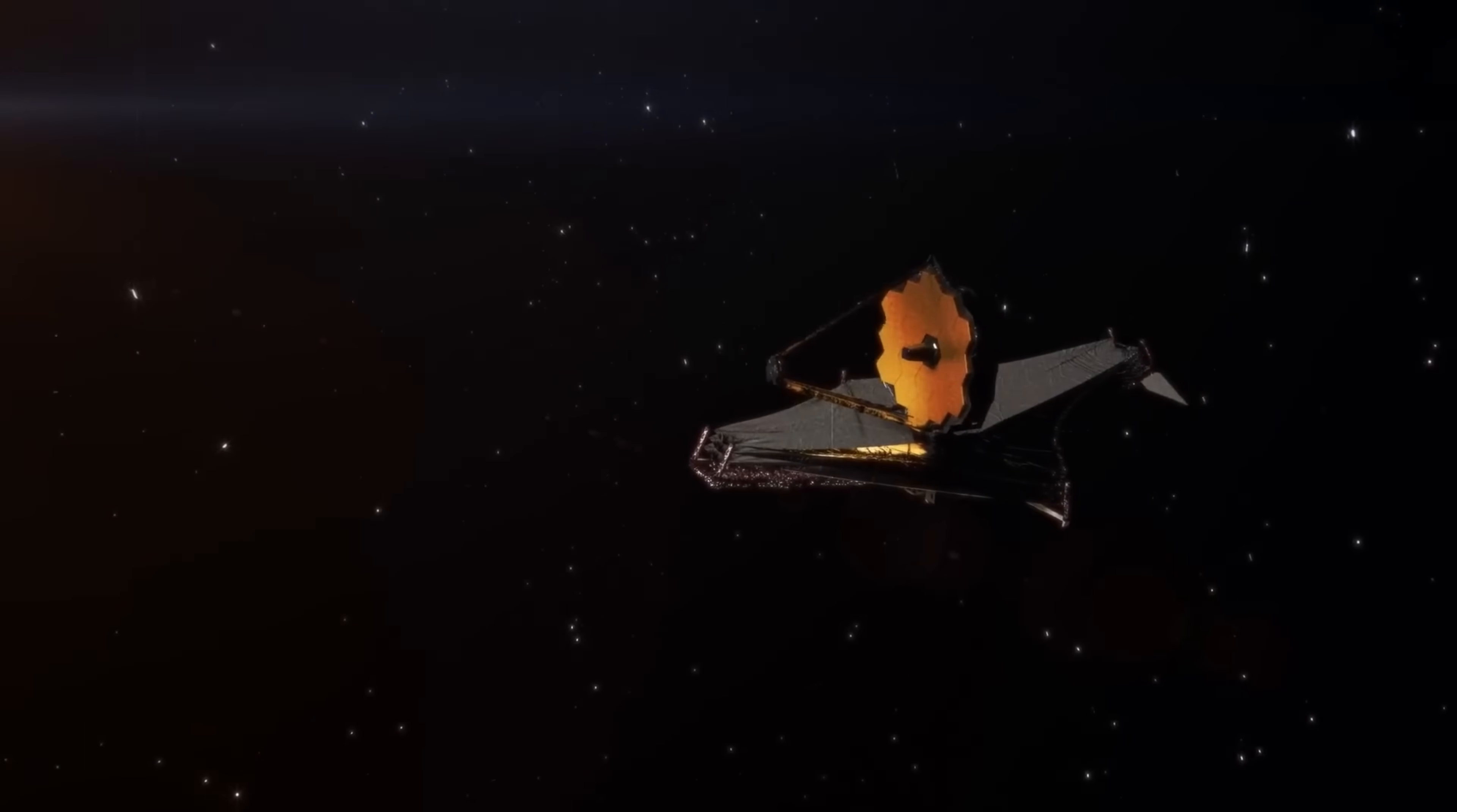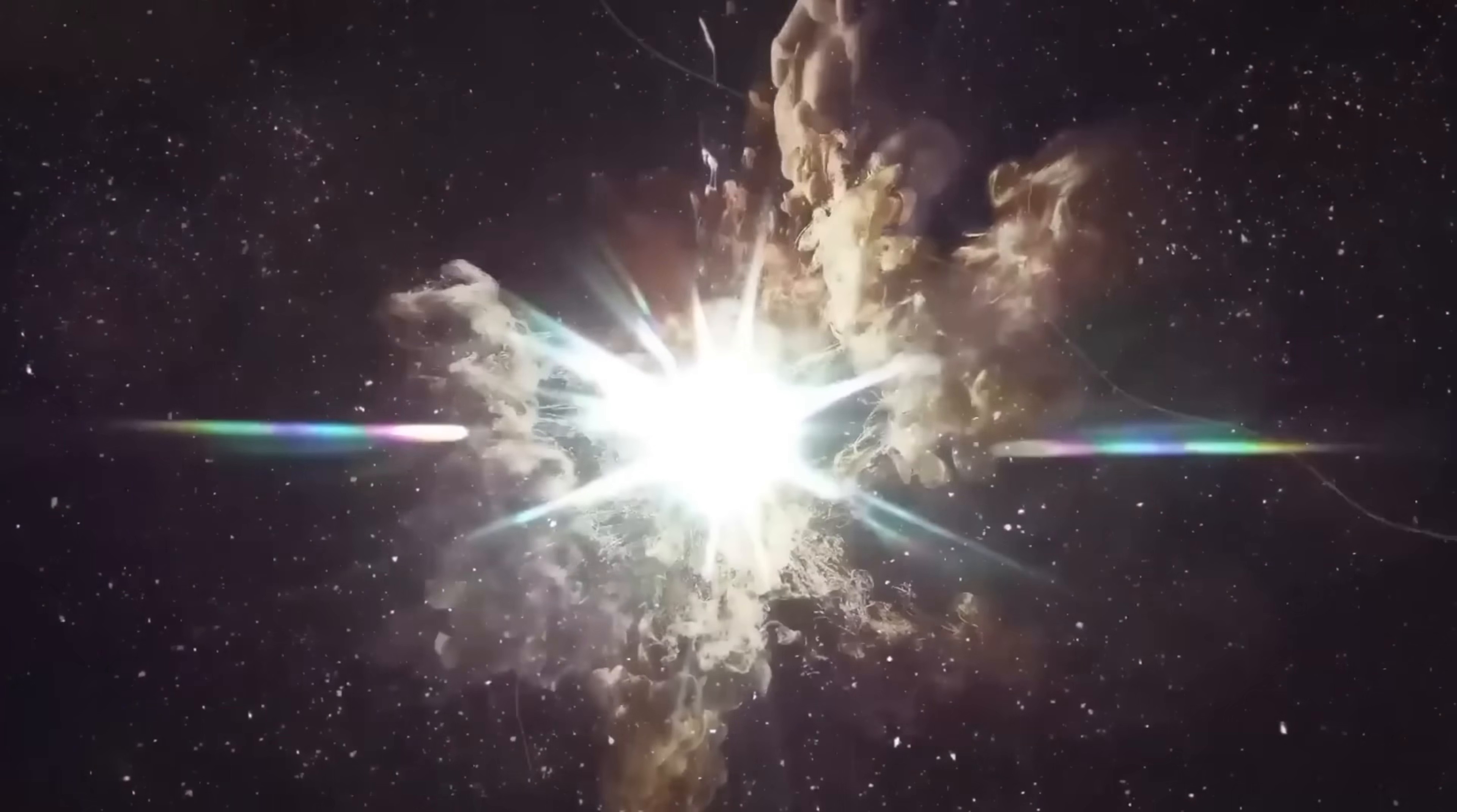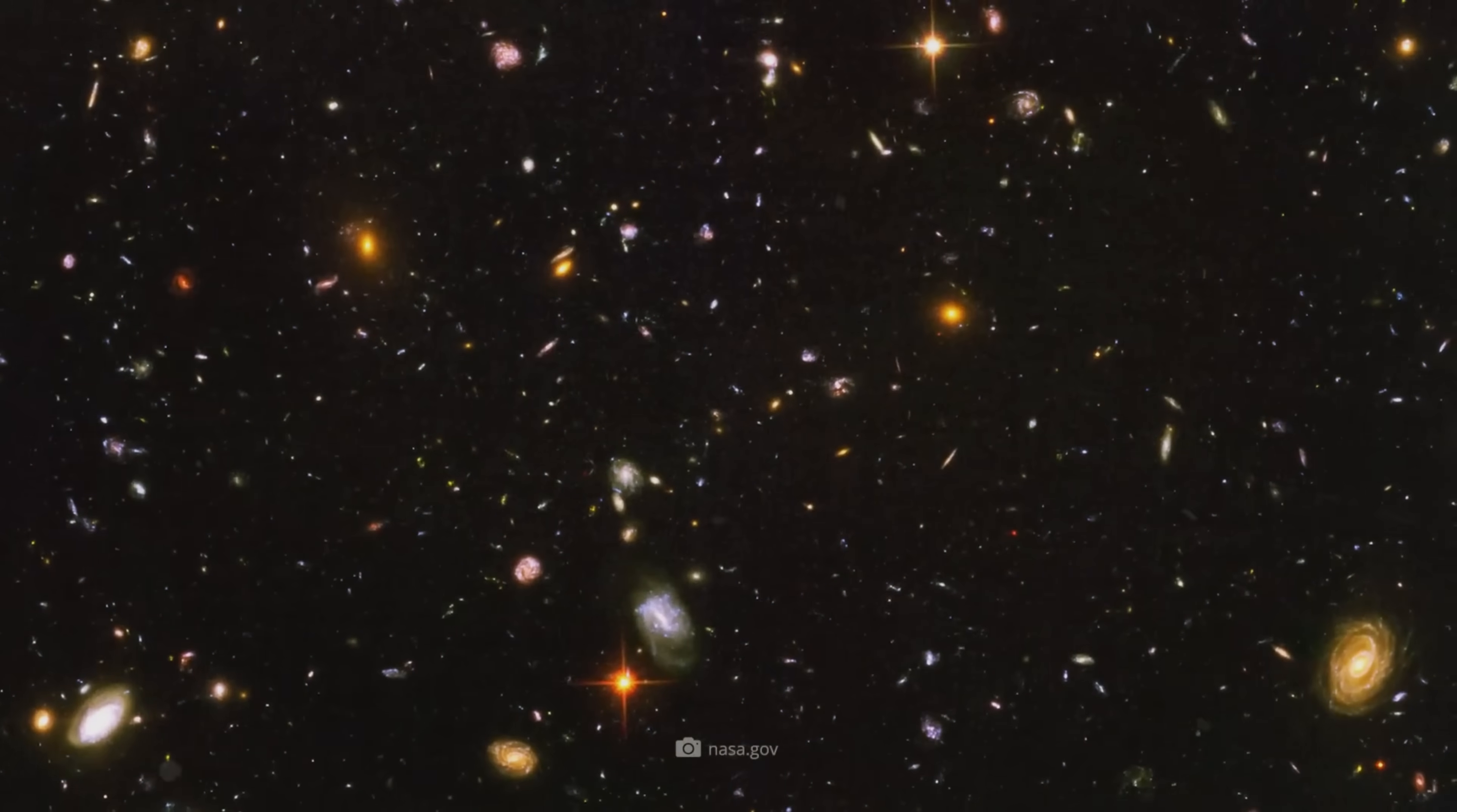As Webb peers deeper into space and time than ever before, it's revealing massive galaxies that shouldn't exist. Giants that formed just a few hundred million years after the Big Bang. According to the standard model, galaxies of this size simply don't have enough time to form so early.